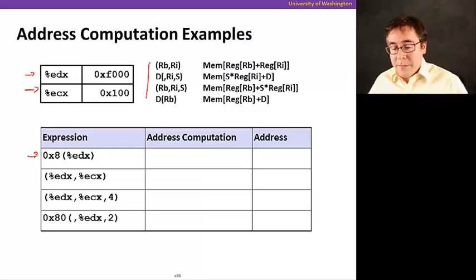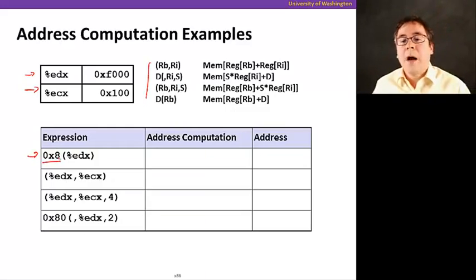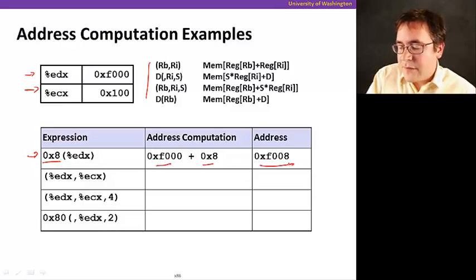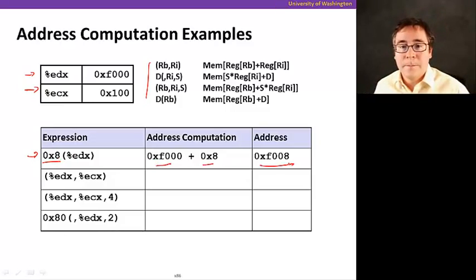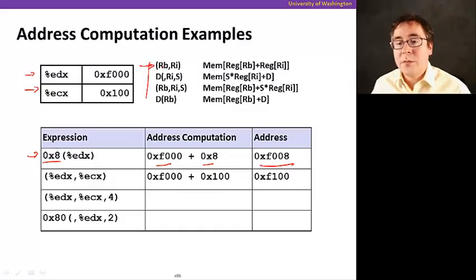So, now, we're going to be exercising all of these addressing modes here. Let's start with the first one. This first one here, our D, the displacement, is 0x8. And we're adding this to the contents of EDX. So, we're going to say, well, that's the value of EDX. That's the constant. The final address is just an addition of these two. Now, the next one is using this form here, which is just going to be RB plus RI. In this case, just EDX plus ECX. That's what we get here, F100.